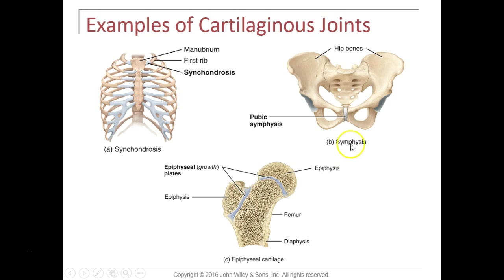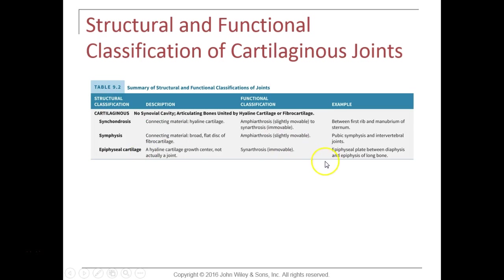The symphyses in the body are all located in the midline, which includes the pubic symphysis between the right and left pubic bones of the os coxae, and the intervertebral discs down our back — those are also symphyses. We have a pad of fibrocartilaginous connective tissue forming those symphyses. These are amphiarthroses, so symphyses allow a little bit of movement, but synchondroses allow no movement.